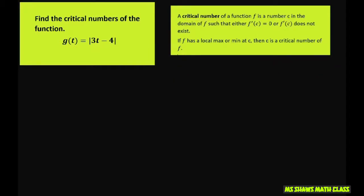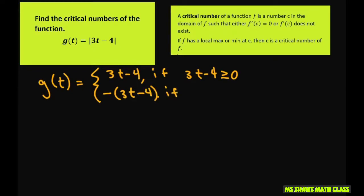So let's start with this one. The first thing I want to do is rewrite this as a piecewise defined function. So we have 3t - 4 if 3t - 4 ≥ 0, and -(3t - 4) if 3t - 4 < 0.